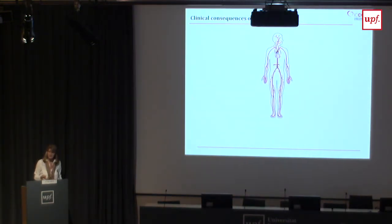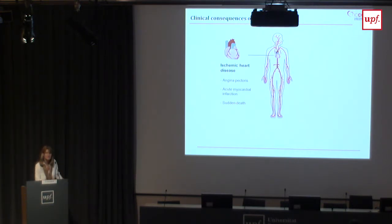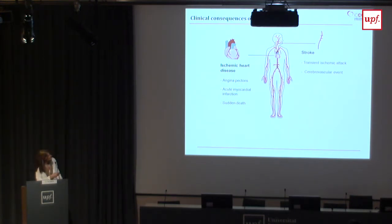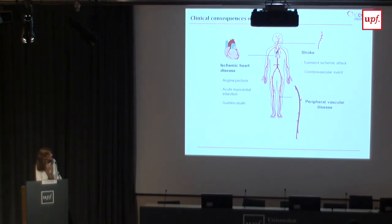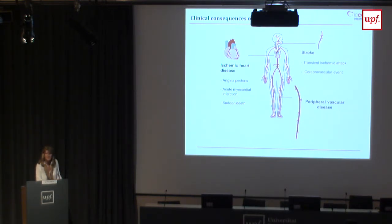Depending on where this occurs, we can talk about ischemic heart disease, sudden death, myocardial infarction, and so on. We can talk about cerebrovascular disease, in which stroke is the main participant — happening in the carotid arteries or the cerebral arteries. And when it happens distally, we're talking about peripheral artery disease. These three different manifestations compose what's called cardiovascular disease.